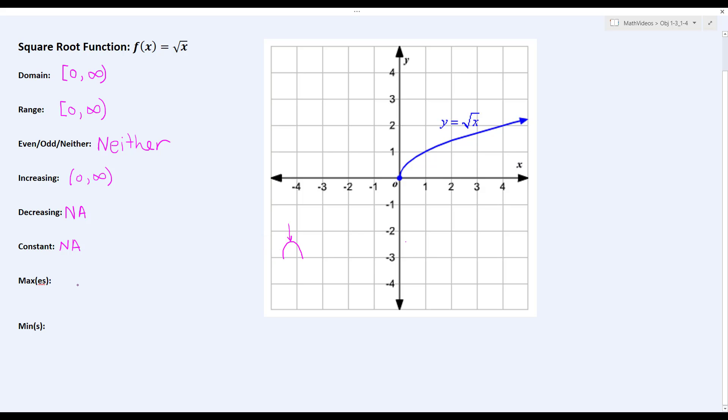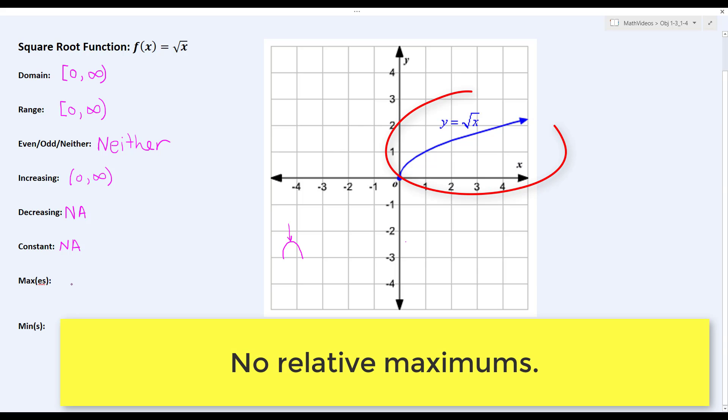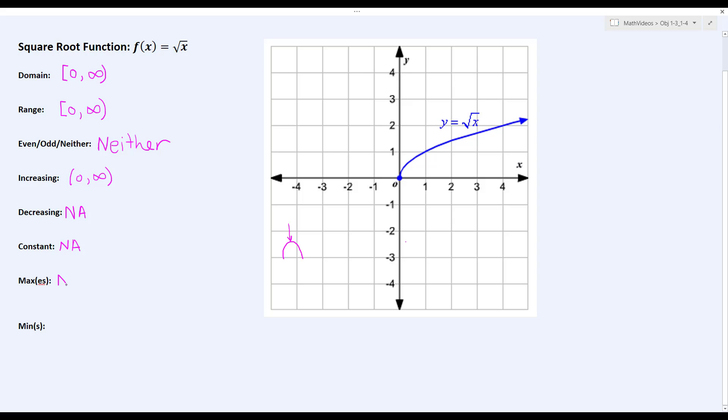As you can see, if we look at our function, there are no high points, no hilltops if you will. And so the relative maximums do not exist for f(x) = √x.